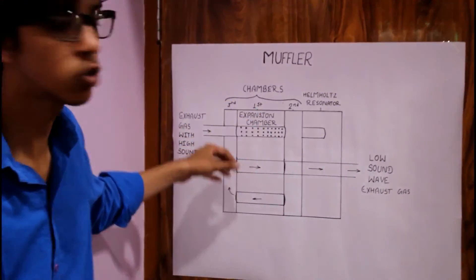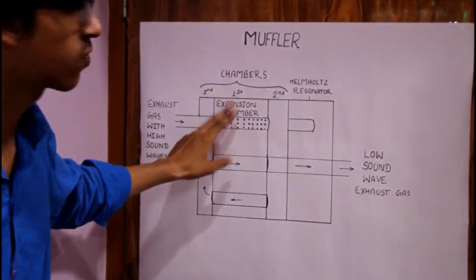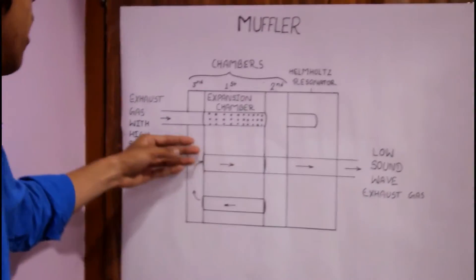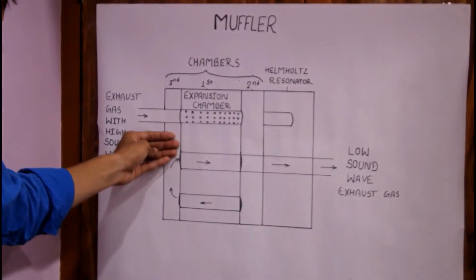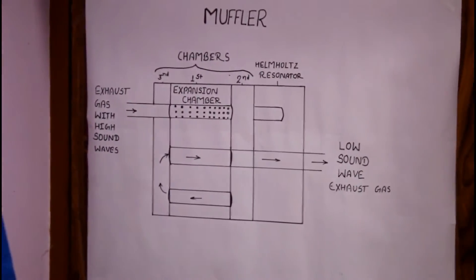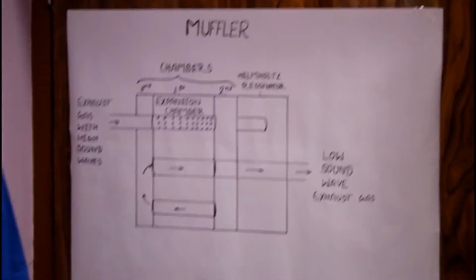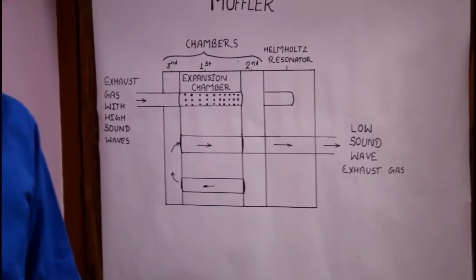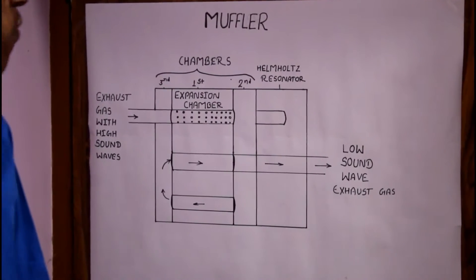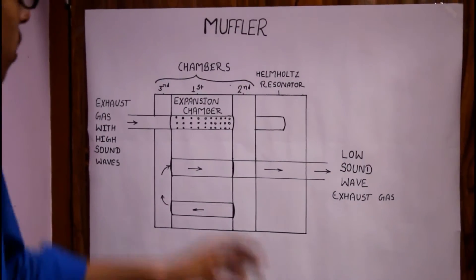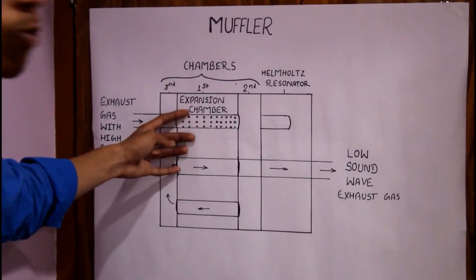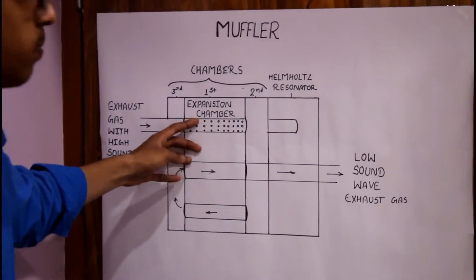Basically the muffler consists of three chambers: the first chamber, second chamber, and third chamber. First of all, the exhaust gases enter inside the first chamber, which is the expansion chamber.